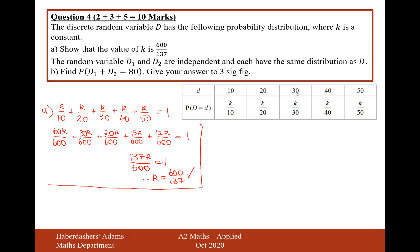We could go 30 then 50 or we could go 40 then 40. So the probability of D1 add D2 equals 80 is going to be going 30 then 50 or 50 then 30 or 40 then 40. So it's going to be the probability of 30 and then 50, add the probability of 50 add 30, and then add the probability of 40 and 40. So the probability of 30 is going to be k over 30. The probability of 50 is going to be k over 50. If we want both of these two things to happen and they're independent, then we'll multiply them together.